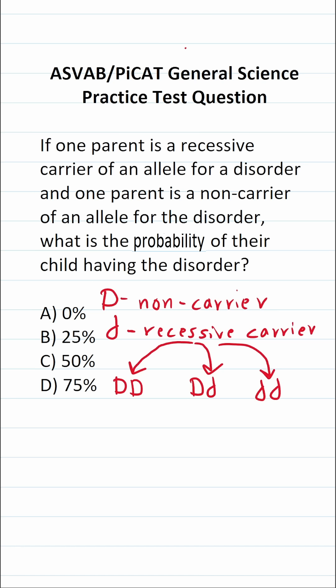Let's talk about alleles for a second. Alleles are what make up someone's genotype, that is their genes. The letter variable capital D represents someone who is a non-carrier of the disorder, and the letter variable little d represents someone who is a recessive carrier of the disorder.